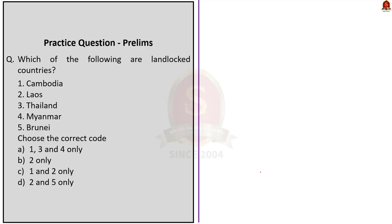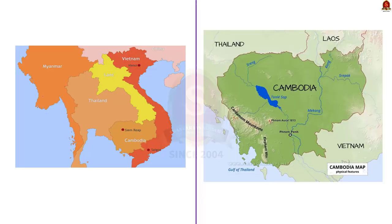Our next question asks which of the given countries are landlocked. The answer is option B — two only. Laos is the only landlocked country in Southeast Asia. Recently there was news about Cambodia about the decline of democratic institutions. From the map, Cambodia is not a landlocked country. The water body closer to Cambodia is the Gulf of Thailand, not the South China Sea. Laos is the only landlocked country in this region. Cambodia is bordered by Thailand, Laos and Vietnam.